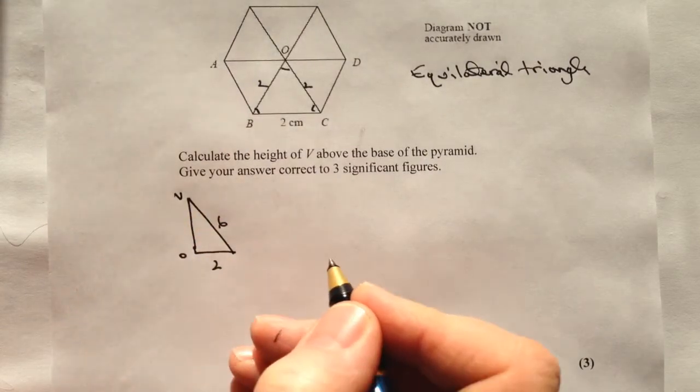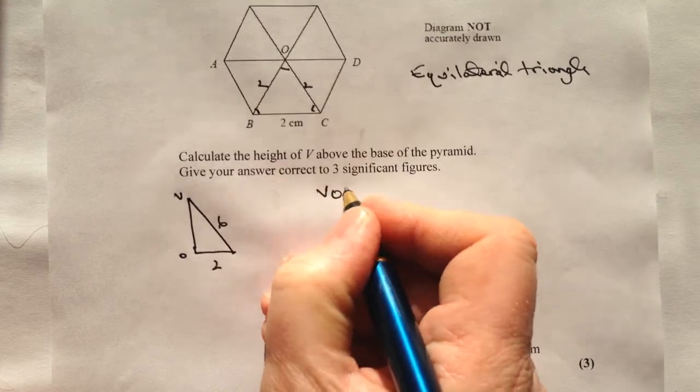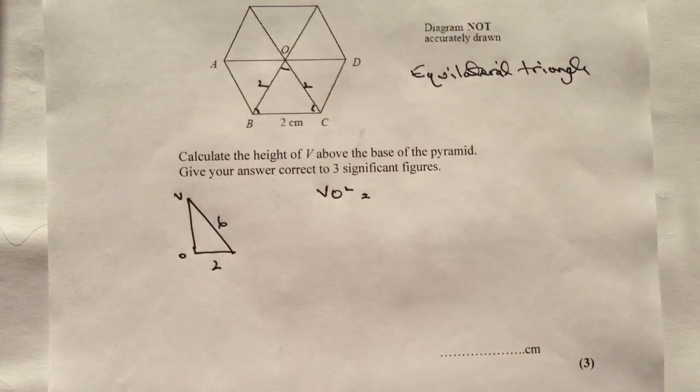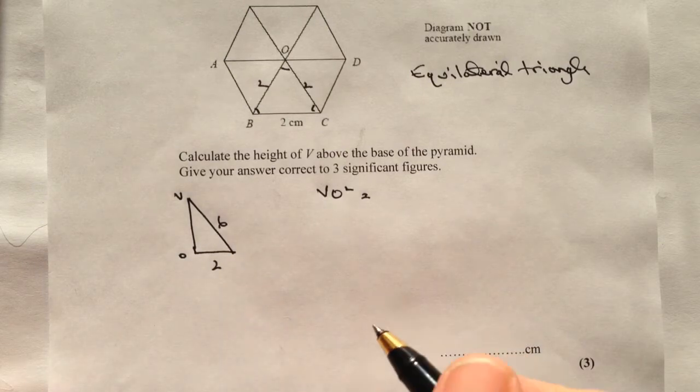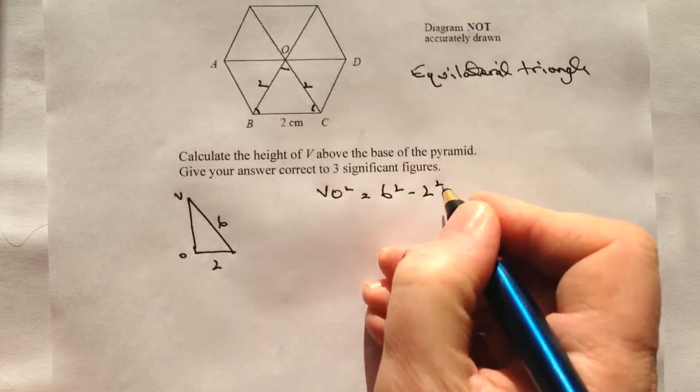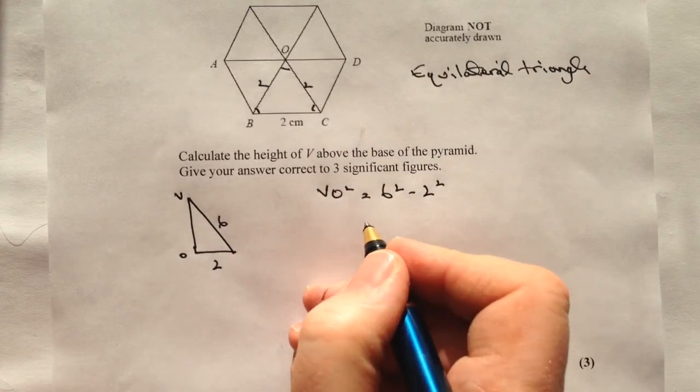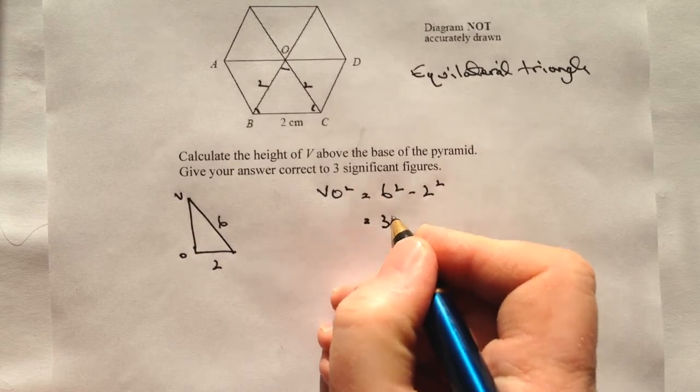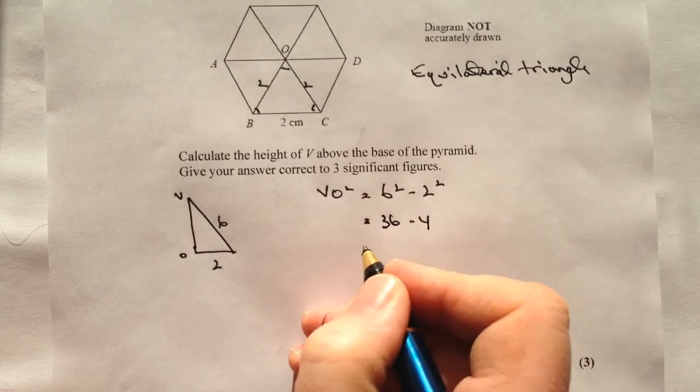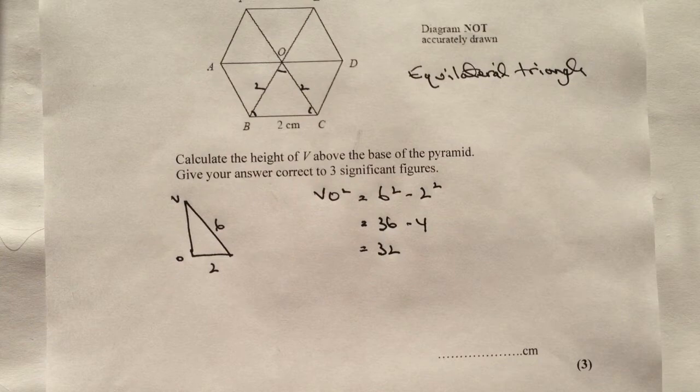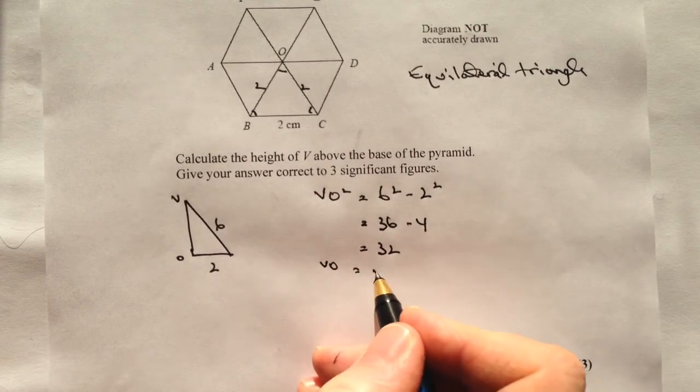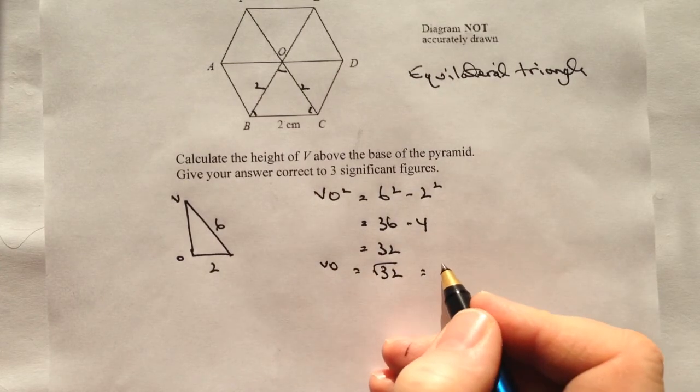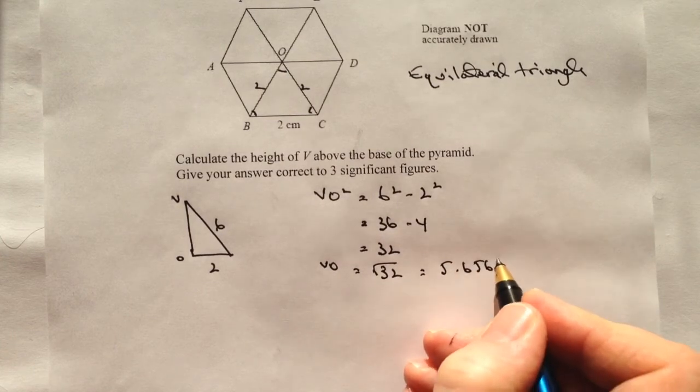So if we call that O and V, if I say VO squared equals, now I'm just going to do it for the sake of this, so I'm going to take this square away from this square and that will just mean that I don't have to manipulate too much on the video. So I've got 6 squared minus 2 squared is 36 minus 4. So that's going to give me 32. So actually VO as a dimension, remember this is VO squared, so VO is going to equal the square root of 32 which equals 5.6568.